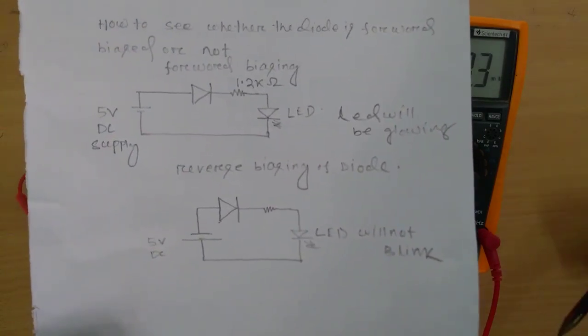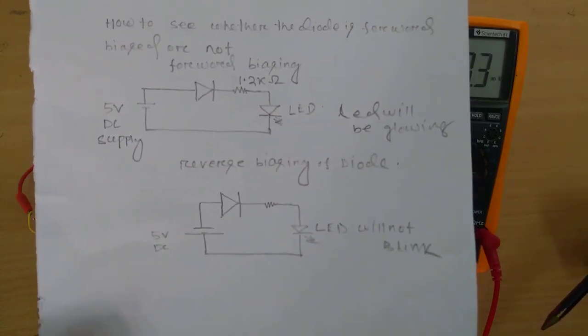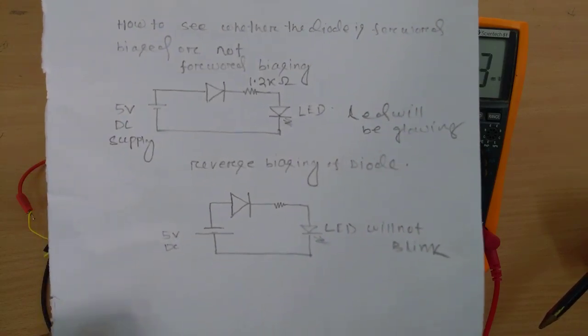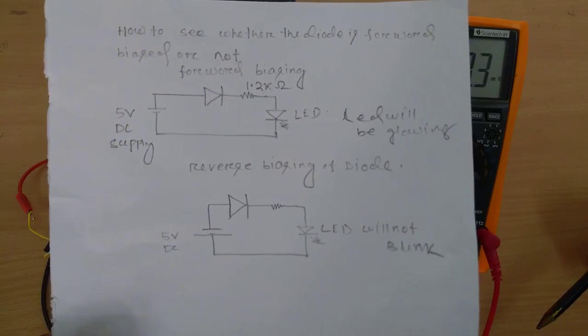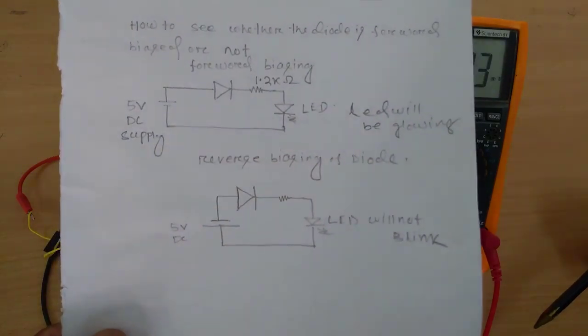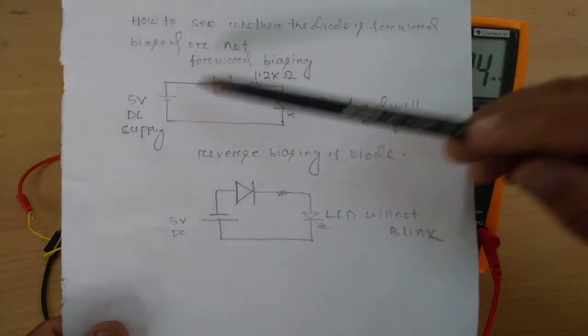Today I am going to tell you the forward biasing and reverse biasing condition of a diode by the help of a LED light emitting diode. The circuit diagram I have drawn over here.